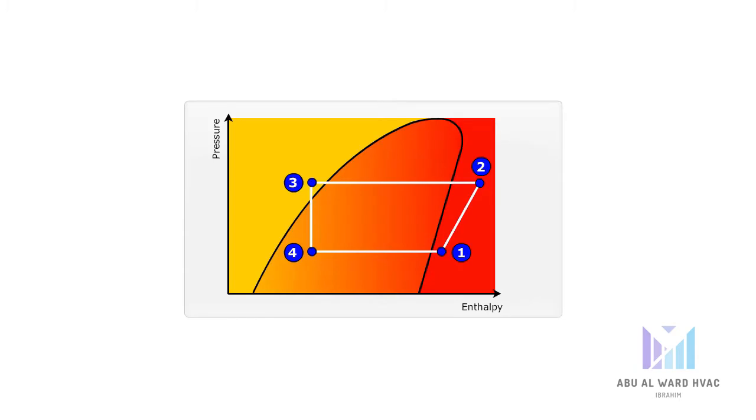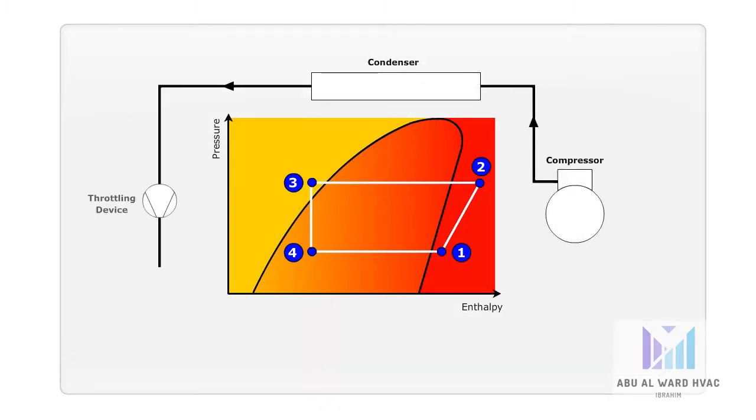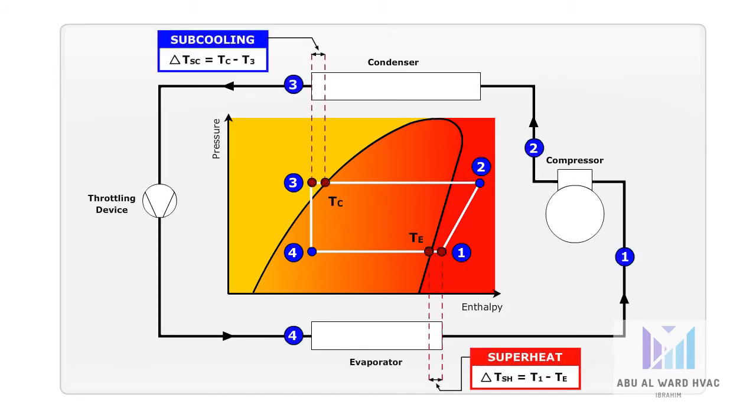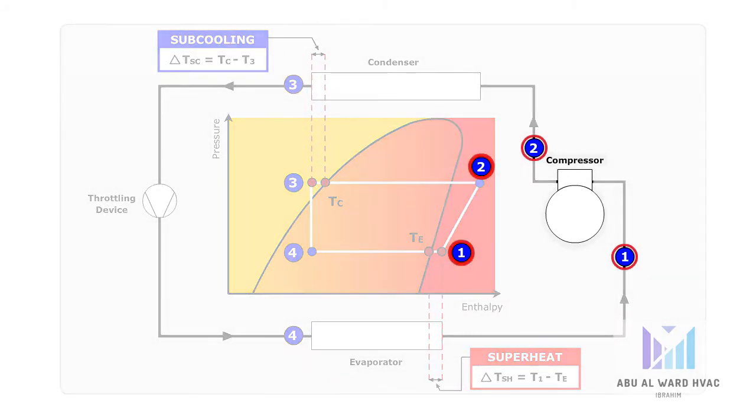This is a schematic of a refrigeration system showing what happens with the refrigerant in the four main system components. Firstly, between point one and two, the pressure of the refrigerant vapor is increased by the compressor. Refrigerant leaves the compressor as hot vapor at high pressure.